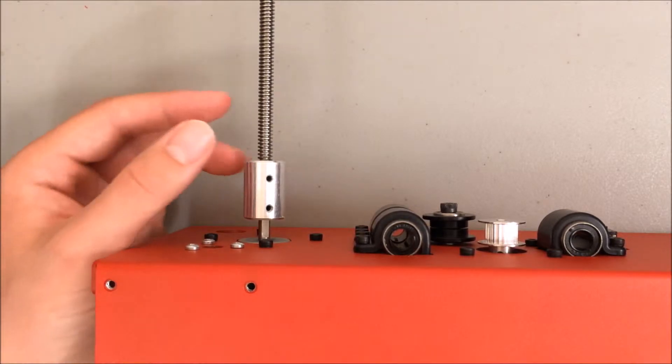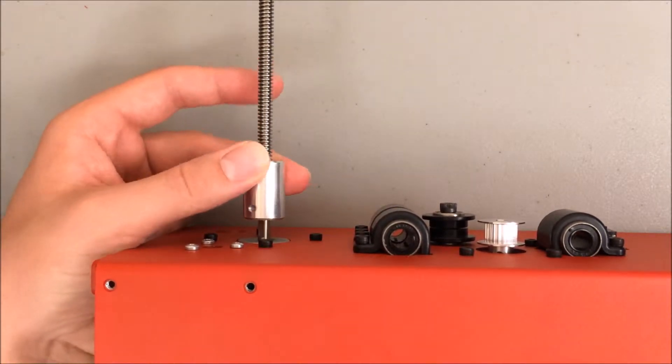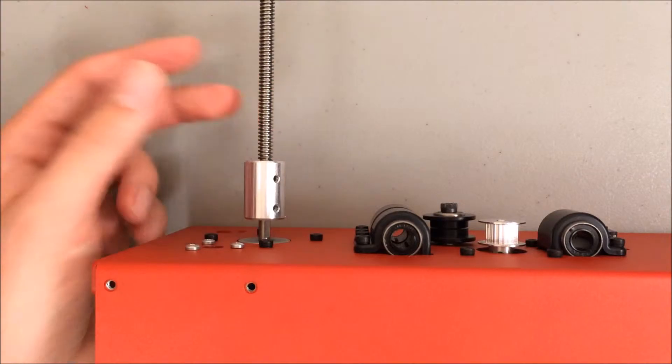This attaches to the Z motor so whenever this spins the extruder goes up and down according to the direction of the rotation.